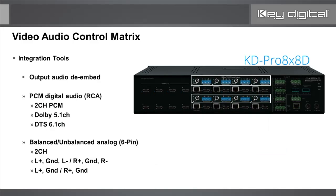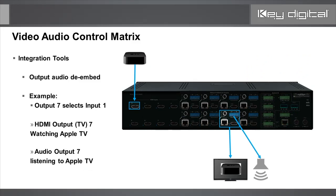Each of the eight outputs has its own output audio de-embed that follows the selected video source per output. You have digital audio supporting two-channel, 5.1, and 6.1 formats but not HD formats, and analog audio supporting two-channel balanced or unbalanced. It is important to use this tool correctly — it is an output audio de-embed. For example, if output 7 is viewing an Apple TV, both the HDMI and HDBaseT carry that Apple TV's video and audio, and the audio de-embed ports are also listening to the Apple TV.